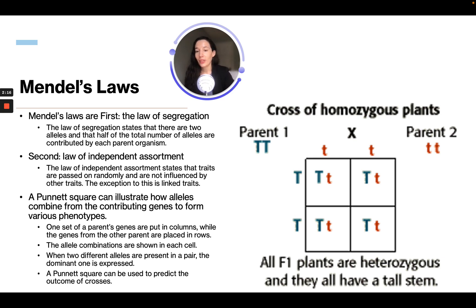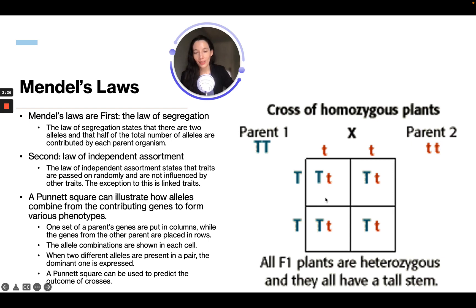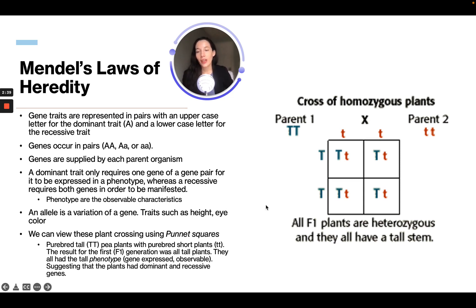The allele combinations are shown in each cell. When two different alleles are present in a pair, the dominant one is expressed — so we know the dominant tall is expressed. A Punnett square can be used to predict outcomes of a cross. Gene traits are represented in pairs with an uppercase letter for the dominant trait and a lowercase letter for the recessive trait, and genes are supplied by each parent organism.